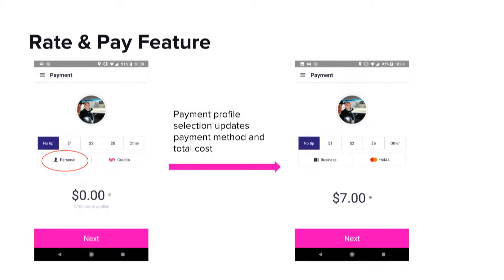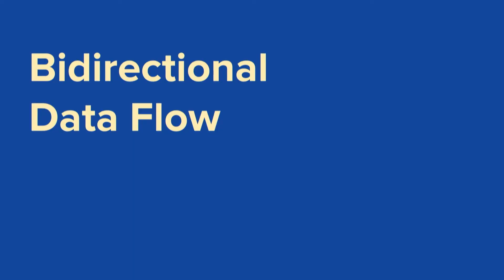Here's another example of a cascading UI update. The passenger selects the payment profile. The view updates the selected payment profile to a business profile. The selected payment method is updated to the default business payment method. And because credits cannot be used for business rides, we also update the total amount charged to the full price of the ride.